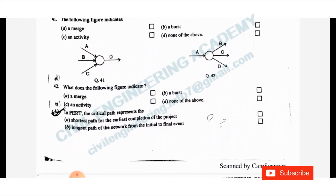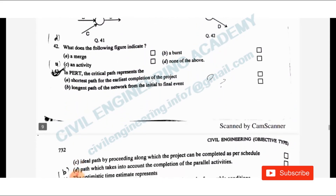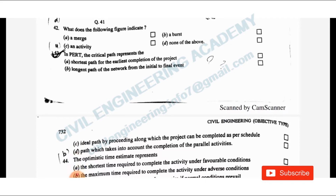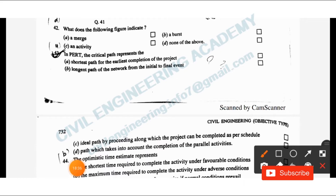Question 43: The critical path represents which of the following? Option A: shortest path for the earliest completion — not correct. Option B: longest path of the network from the initial to final event. The critical path is the longest overall duration path, which gives the shortest time possible to complete the project. Option B should be the answer.